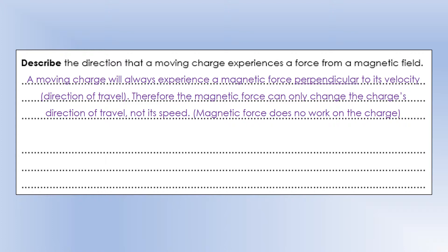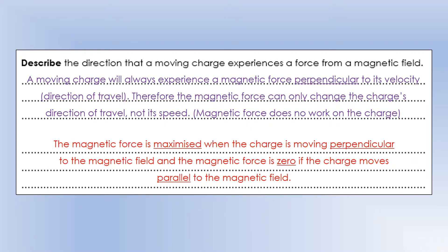Another way of thinking about this in terms of energy: the magnetic force does no work on the charge, because the force and the distance it travels are always perpendicular. If the charge is moving perpendicular to the magnetic field, that maximizes the magnetic force. If the charge is moving parallel to the magnetic field, there's actually no force acting on it at all.